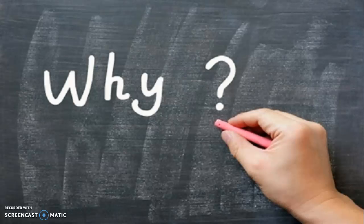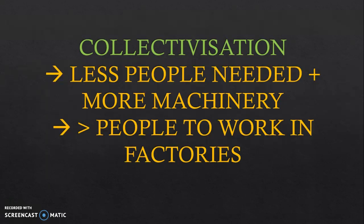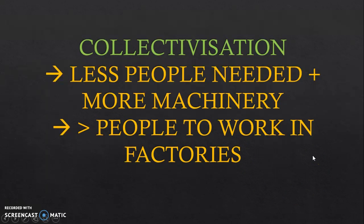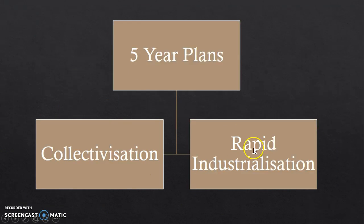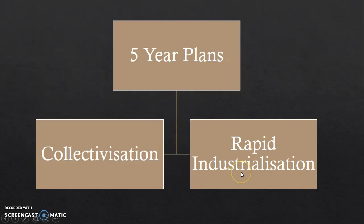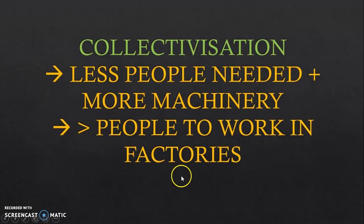Why did Stalin want to carry out collectivisation? He wanted to achieve modernisation. Under collectivisation, less people were needed and more machinery was able to do the work for them, so more people could now work in factories. This would help him in his rapid industrialisation plans. Collectivisation was a means to achieve modernisation, of which rapid industrialisation was more important. By pursuing collectivisation, more manpower could be devoted to factories, hastening the pace of modernisation.